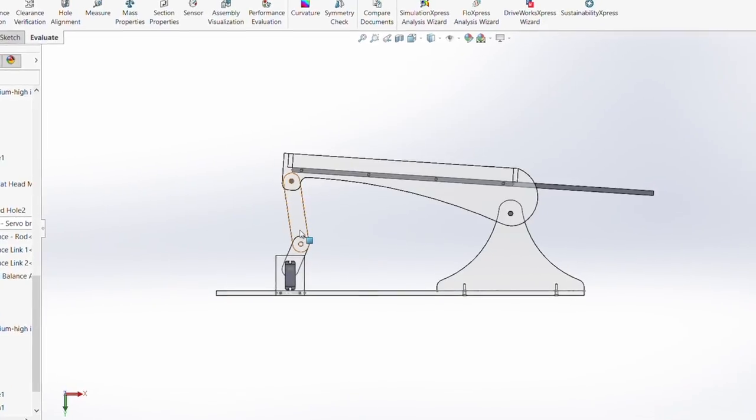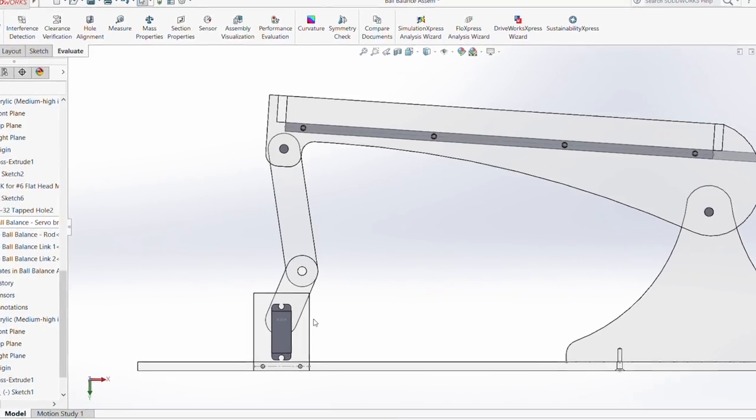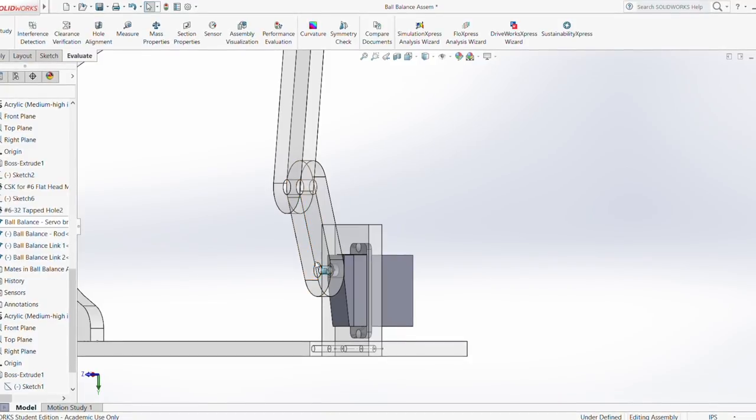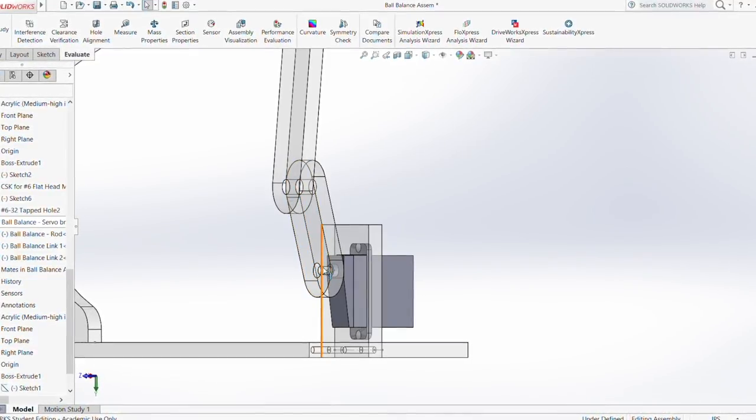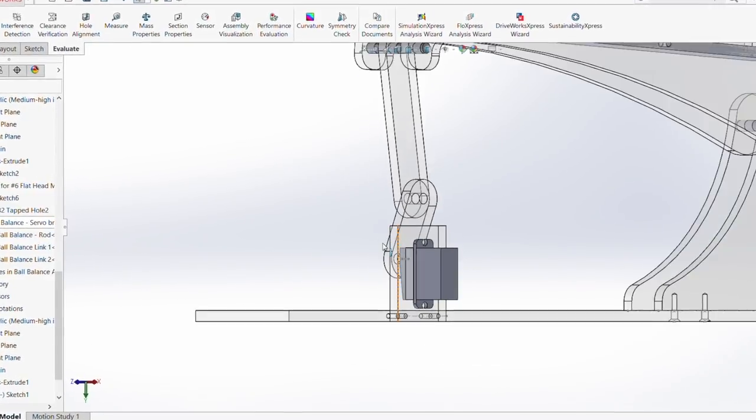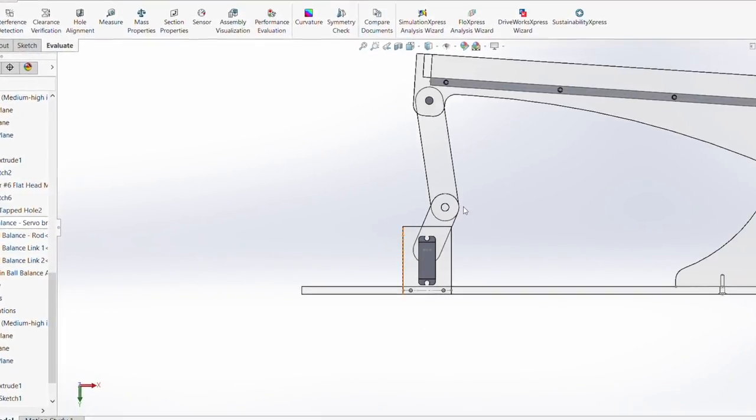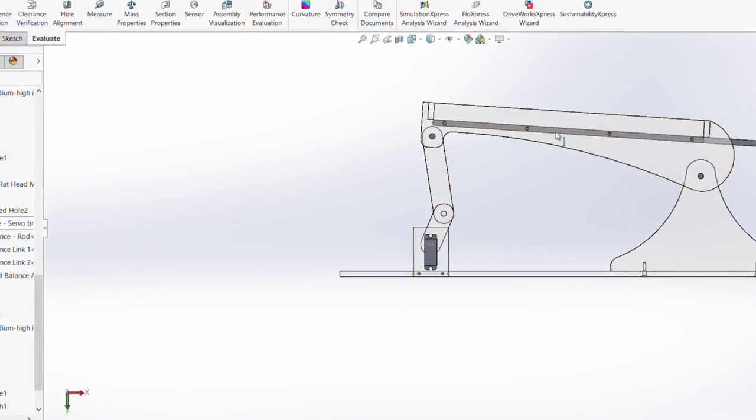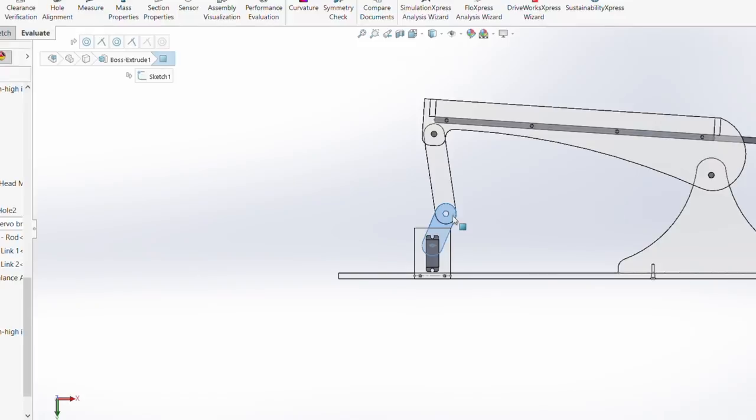As you can see, this is our ball balance all modeled up. Pretty simple. We have a bracket here for the servo, then we have a countersunk screw hole, and a screw fastens this link directly to the servo. So basically, this guy turns and it's a four-bar linkage that just moves the plane up and down.